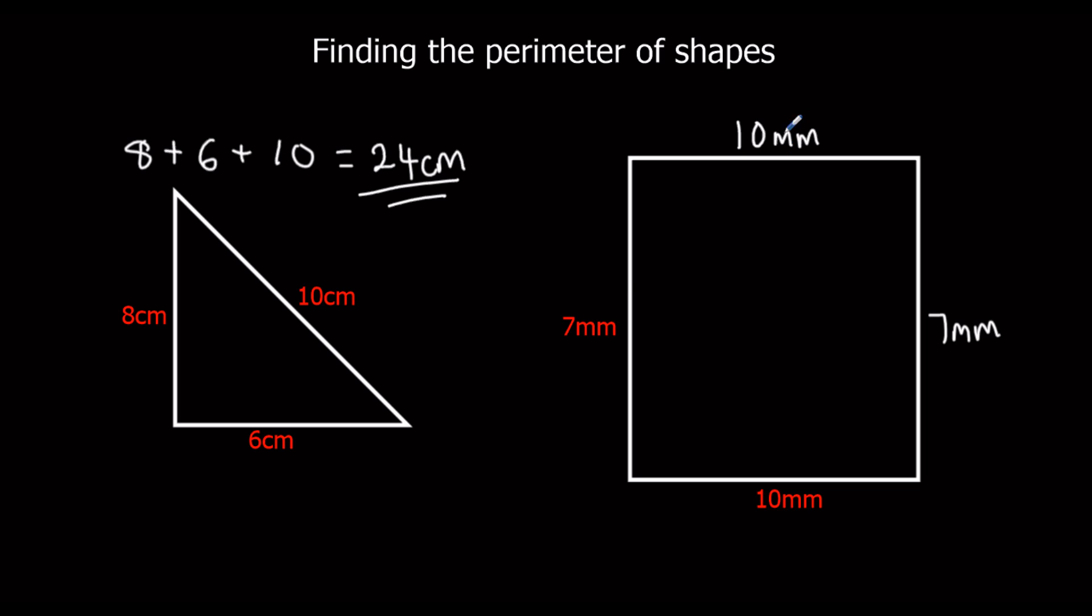So what we've got for the total length around the edge of the shape, the perimeter, we've got 10 and 7, and we've got that again. I'll just put 10 plus 7 plus 10 plus 7.